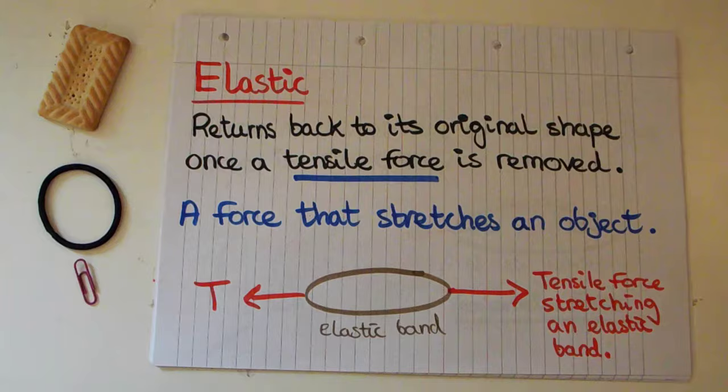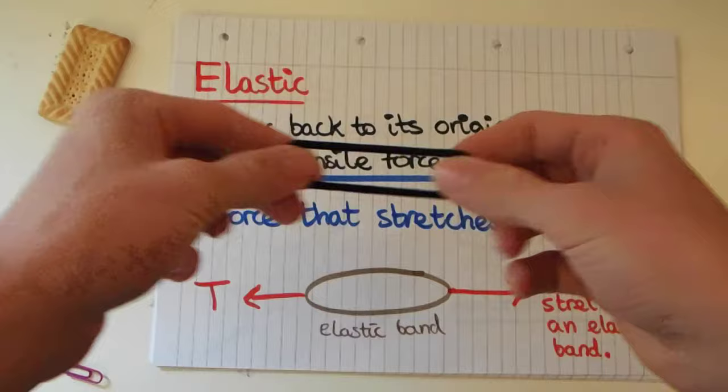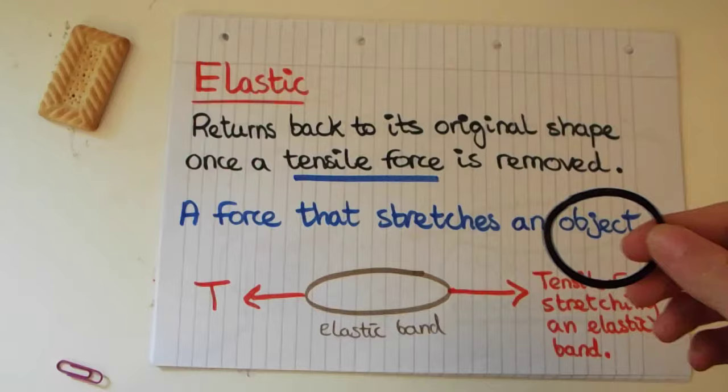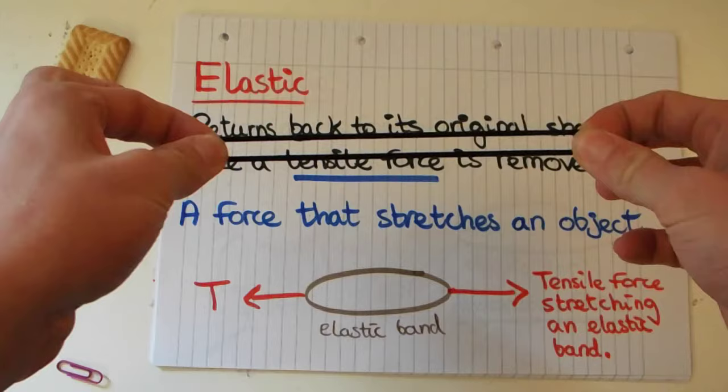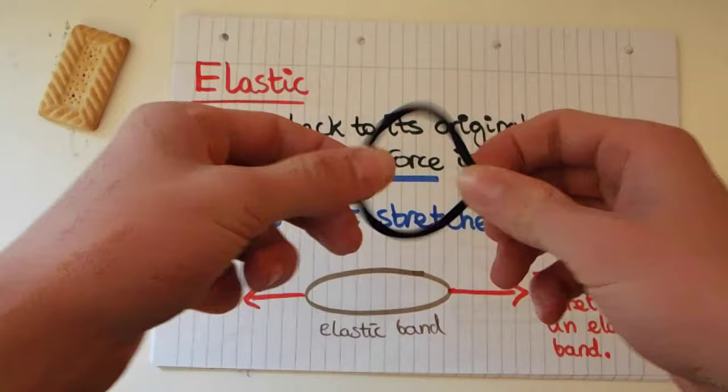A tensile force is just a force that I use to stretch an object. So when I stretch this hairband I've borrowed from my step sister, I apply a tensile force to it, and then once I remove that tensile force it returns back to its original shape, so because of that it is elastic.